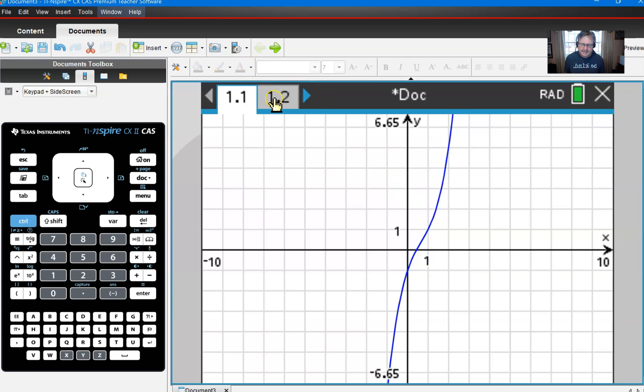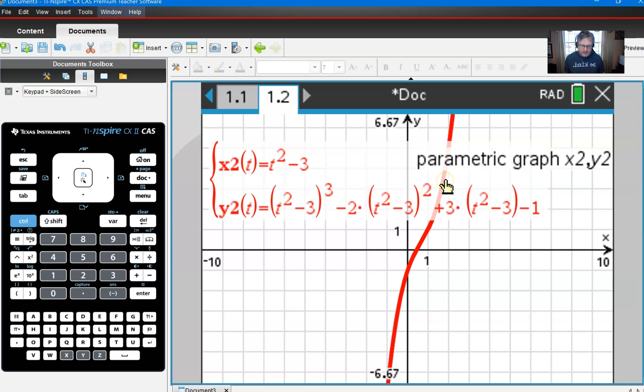Now, if I move on to my second page, what do I have? Well, it looks like I have the same graph, albeit a different color. But if I highlight over it and bring up the parametric equations, I want you to take a look at what you see here.